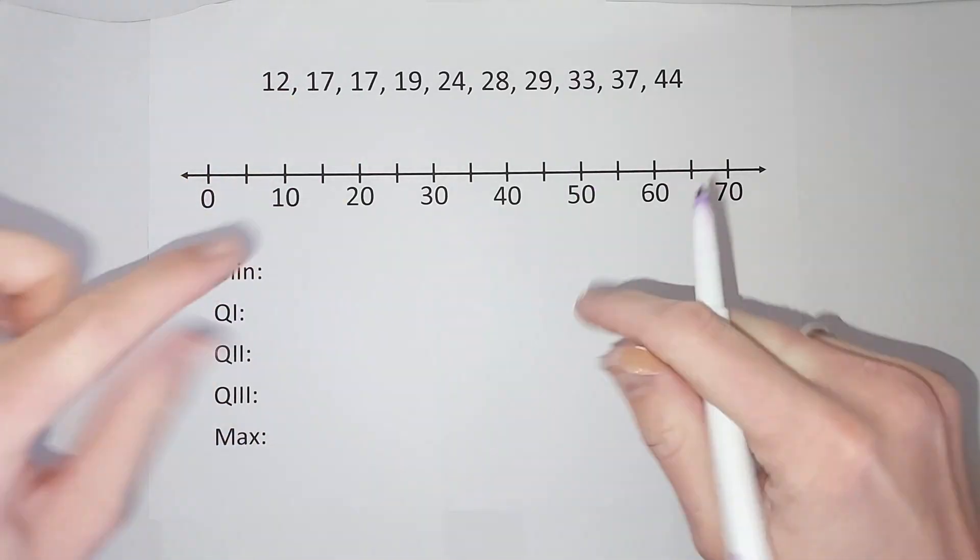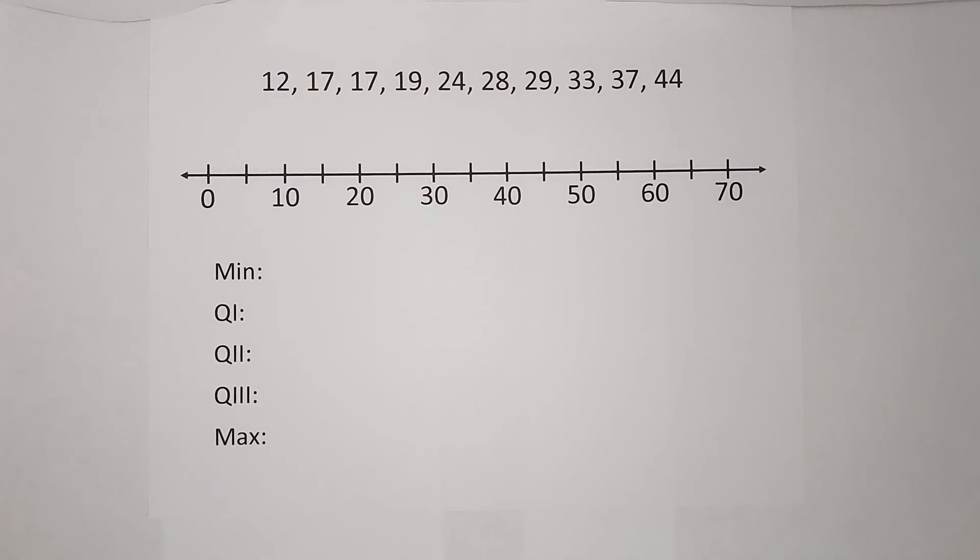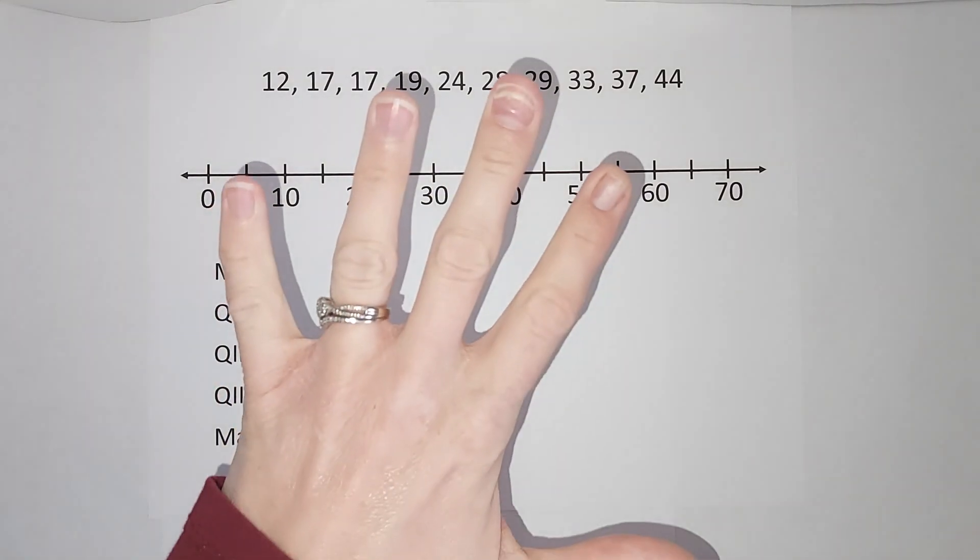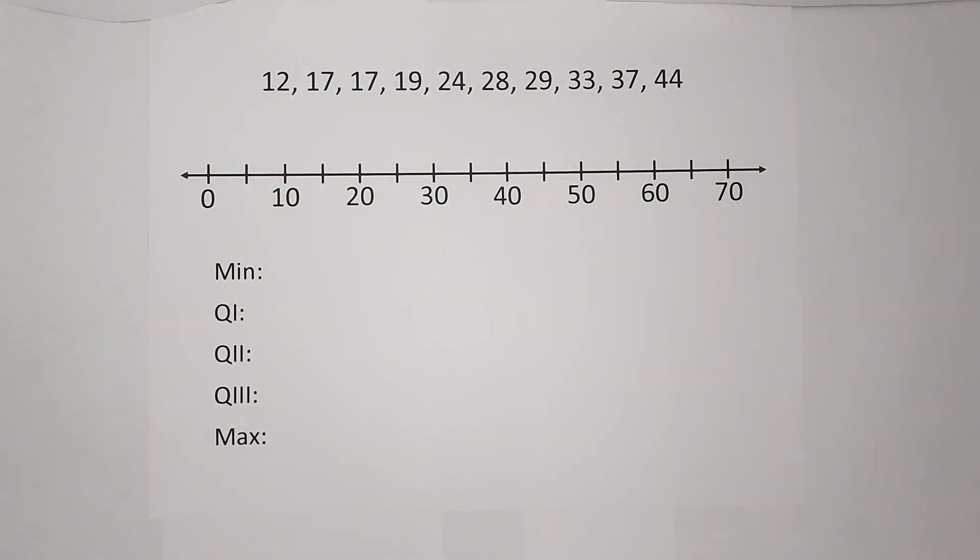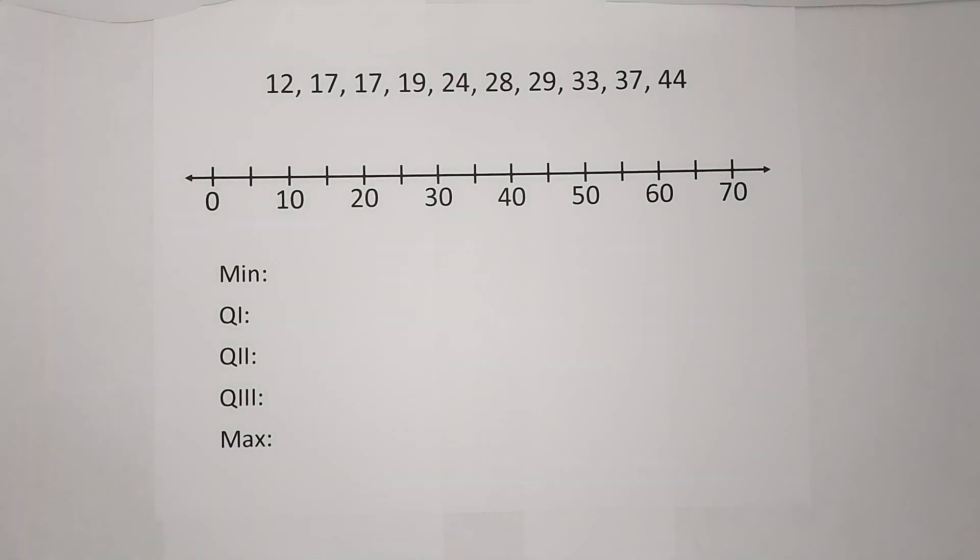We need five pieces of information to be able to make our box and whisker plot. We need a minimum, three quartiles, and a maximum of this set of numbers. In this one we are not going to focus on outliers at all like a modified box plot. I will link a video in the corner for those if you need to learn outliers.